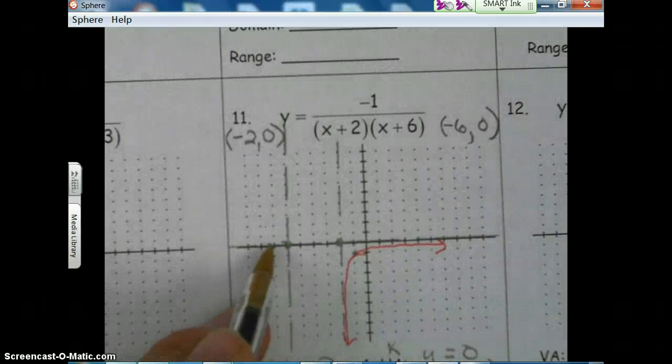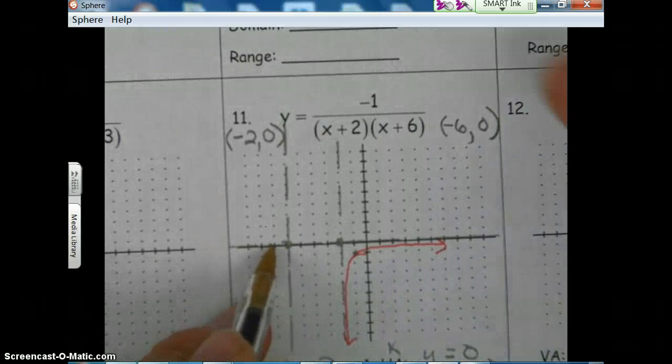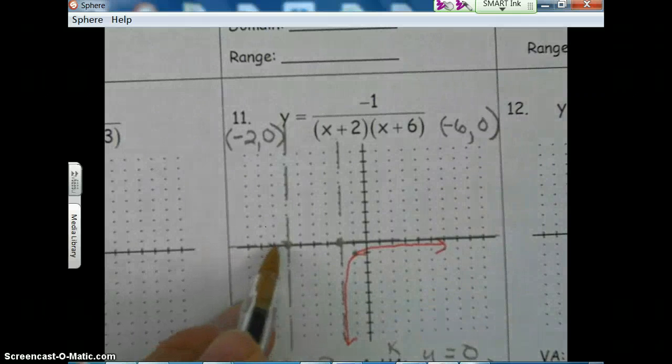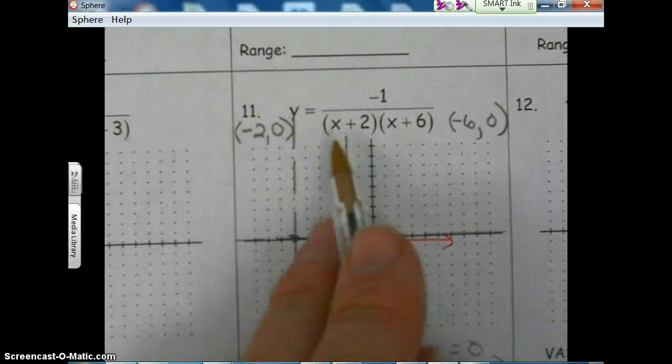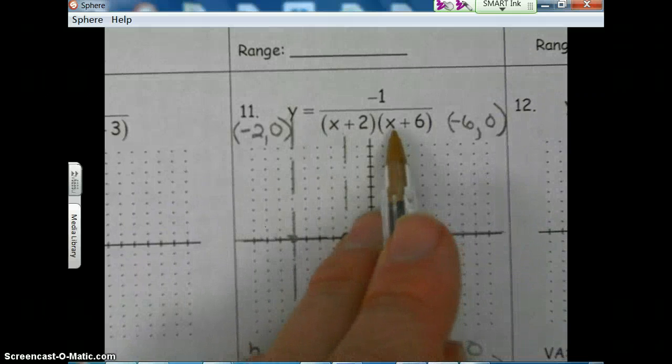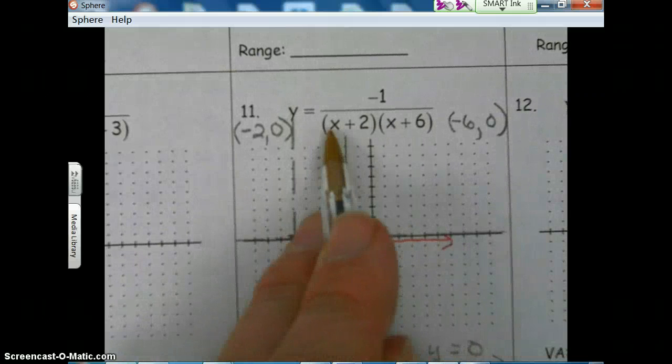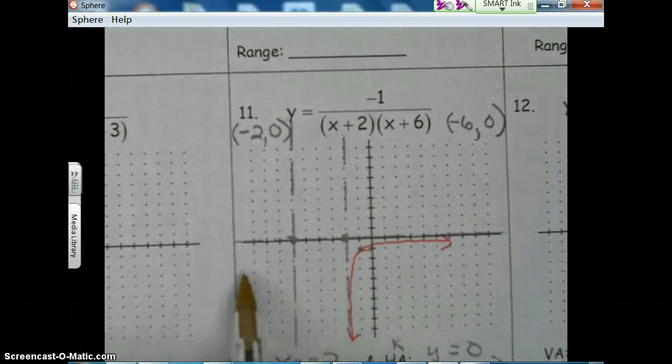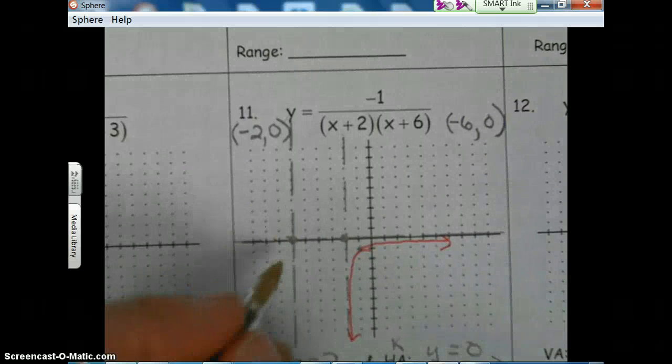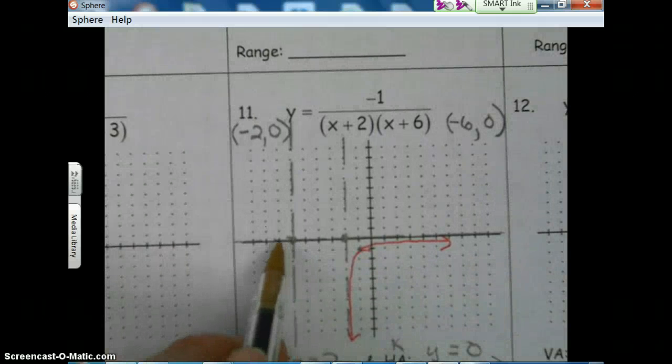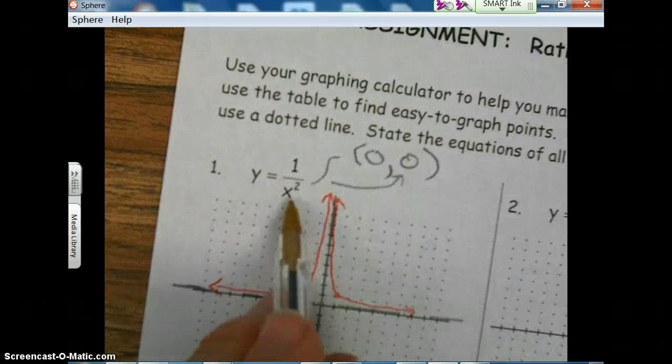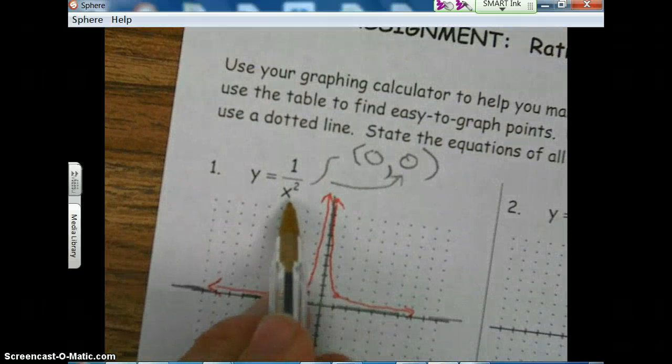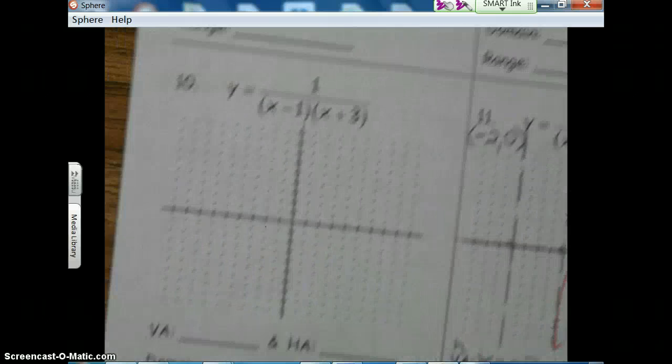And we're going to go left one. And because the denominator is squared, it's going to be on the same side as this part of the graph. So for example, if I go over one to the left, that's going to be negative one. Negative one squared is one.